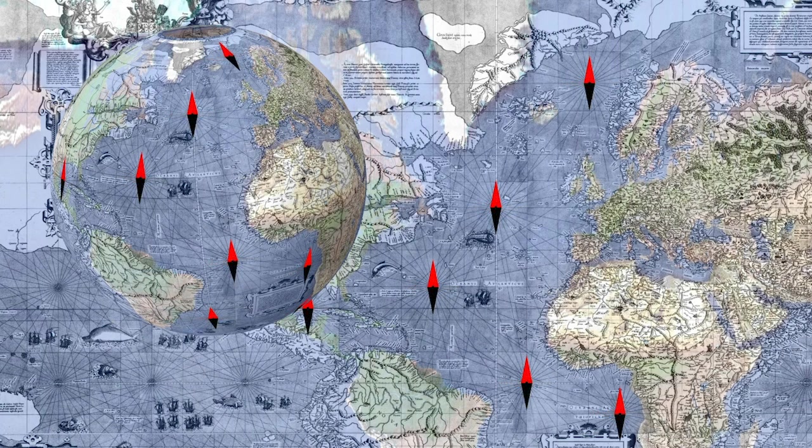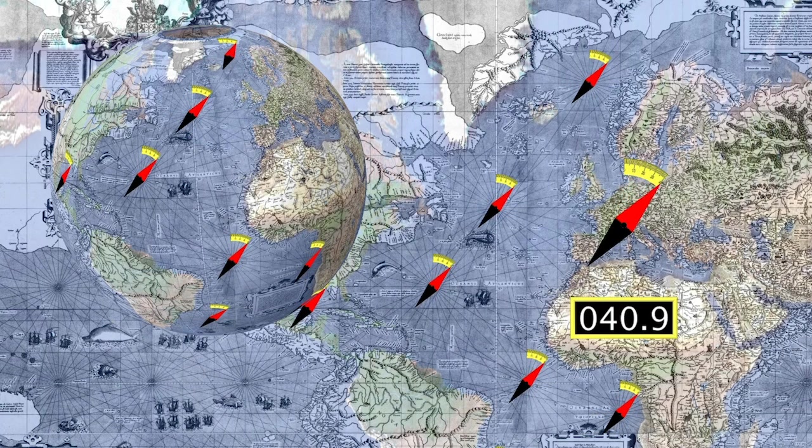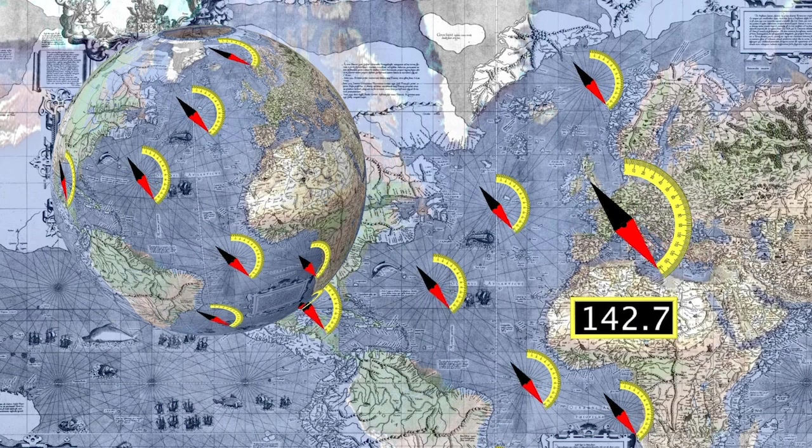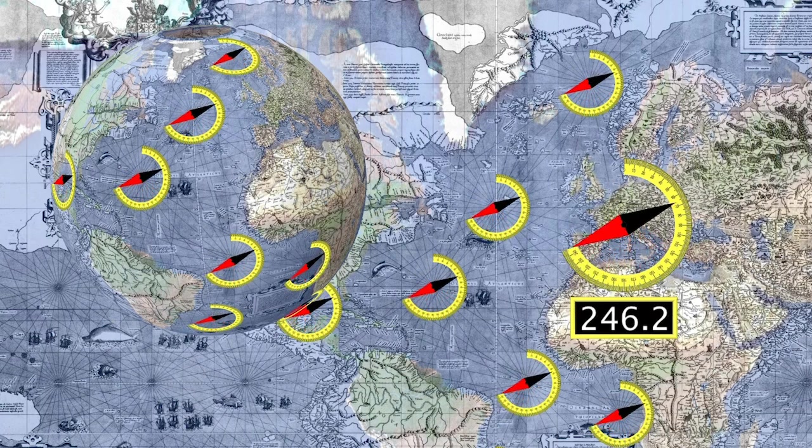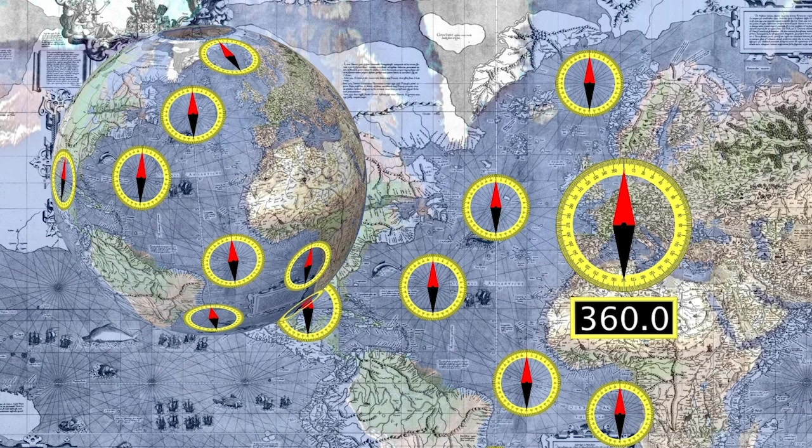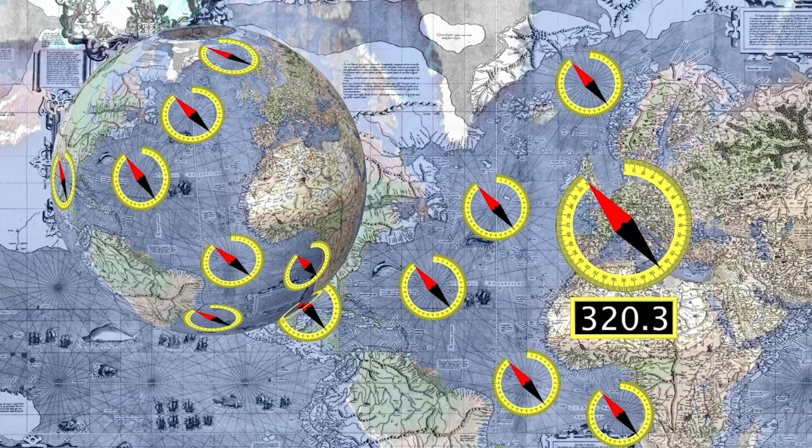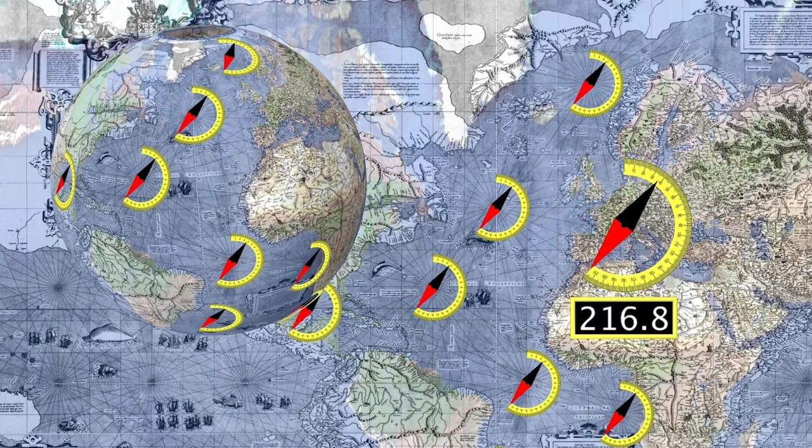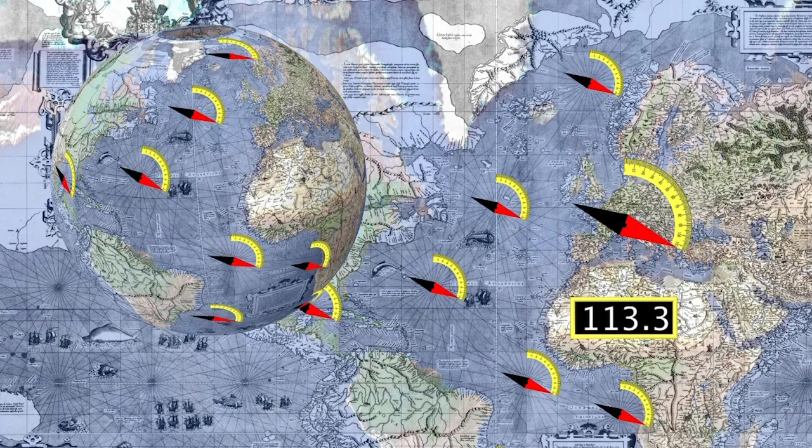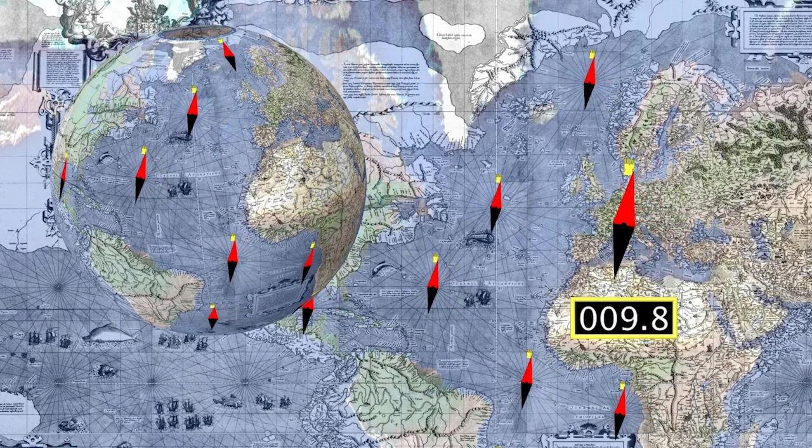But that's not all. All intermediate compass directions are shown correctly on the map, a very useful feature for ocean-going navigation. In fact, Mercator's projection is the only map projection with these properties.